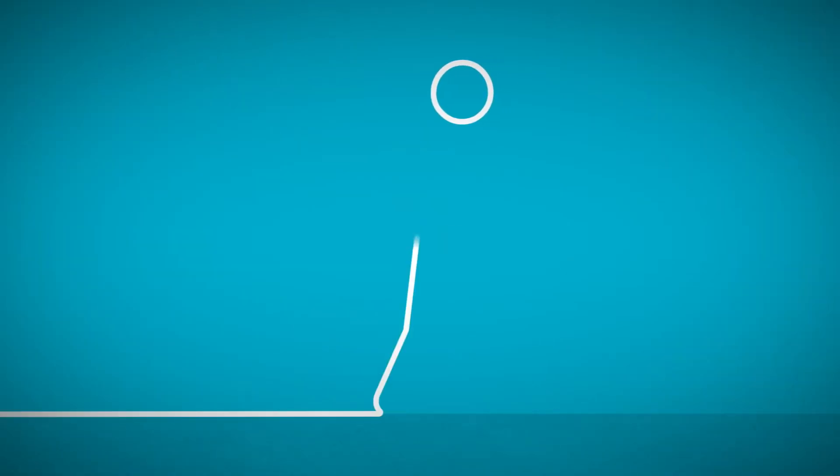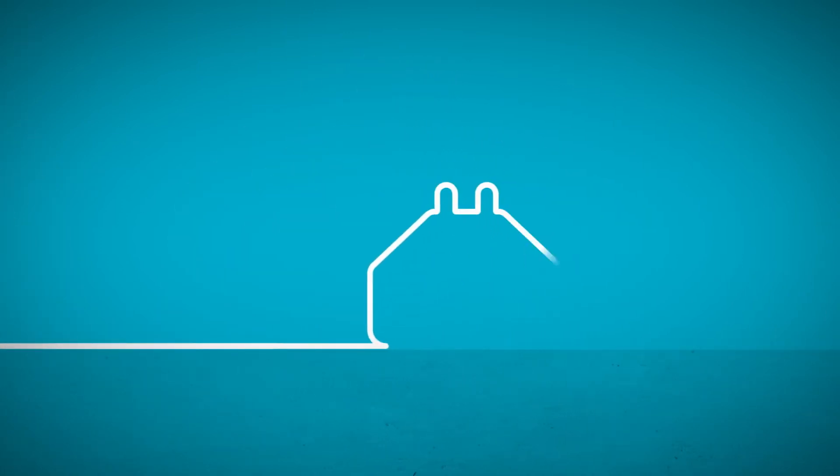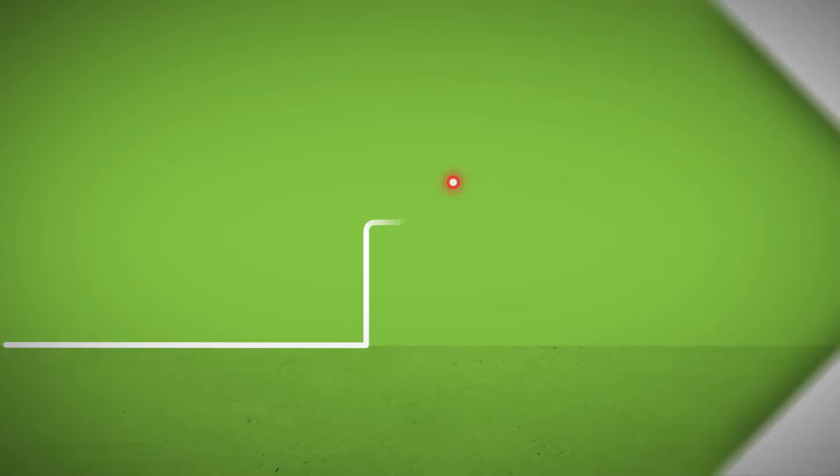Have you ever thought about what a line is? The dictionary definition is a long narrow mark, but lines can be so much more. You can walk the line, toe the line, or drop a line. Something can be offline. You can cross a line. There are hard lines, thin lines, and even dotted lines.